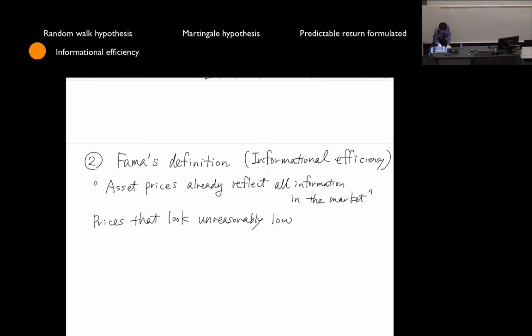Another implication of information efficiency is that if you observe some prices that look unreasonably low, this information efficiency says no, they're not cheap. They look unreasonably low because you are missing some risk information. You are overlooking some risk that many other investors are aware of. That's why the price looks low, but it's not cheap. You are just missing some information so that you are overlooking some risk.